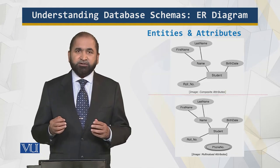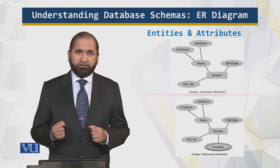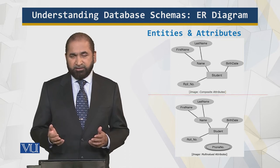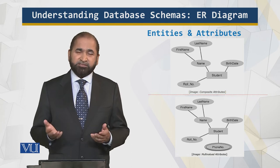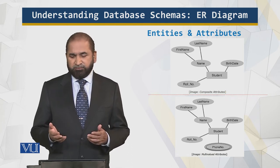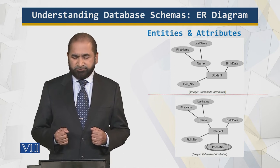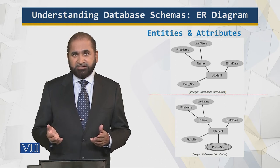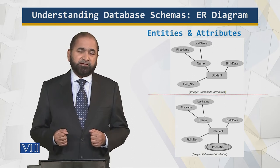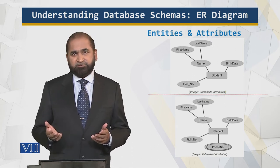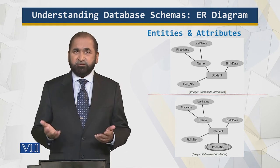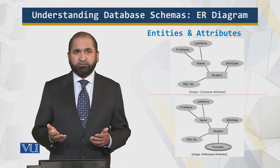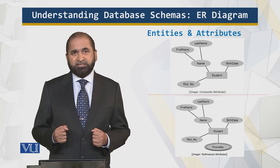Now we can have more details associated with the attributes. For example, if we consider the student name, then the student name may have a last name and a first name, in addition to the birth date and the row number. And of course, there can be entities with attributes that are multi-valued. A student has a single name — we have the first name and the last name, but the name is single. However, a student may have multiple mobile phones or phone numbers. So that is shown by a double line, as you can see at the bottom of your screen.